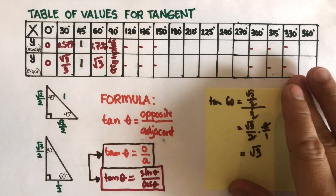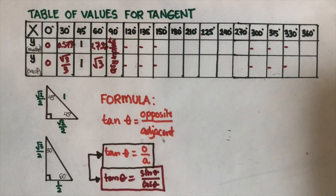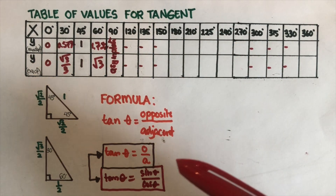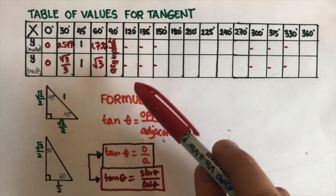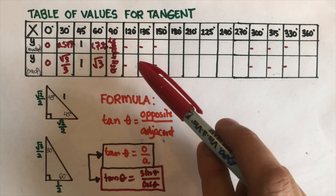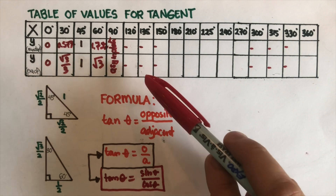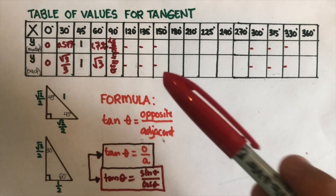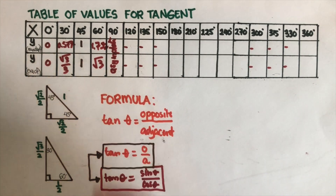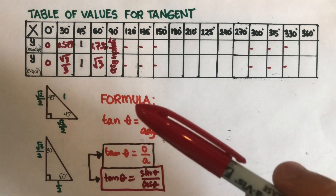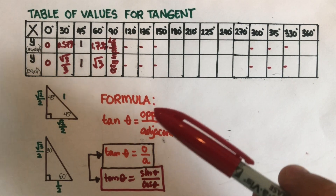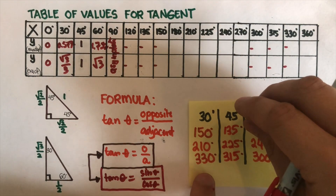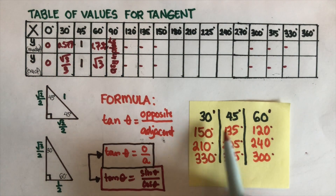Now let's determine some of the other values. I have placed some negatives here because these values will have a negative tangent value. Others may ask: how do we know if it's negative or positive? I have another video that talks about tips and tricks on how to determine whether tangent, sine, and cosine are positive or negative. Please check the link in the description box below.